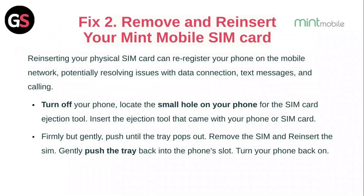Fix 2: Remove and reinsert your Mint Mobile SIM card. Reinserting your physical SIM card can re-register your phone on the mobile network, potentially resolving issues with data connection, text messages, and calling. Turn off your phone and locate the small hole for the SIM card ejection tool. Insert the tool, firmly but gently push until the tray pops out, remove the SIM and reinsert it, then gently push the tray back in and turn your phone back on.